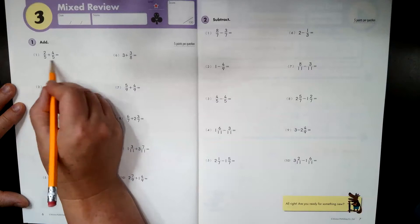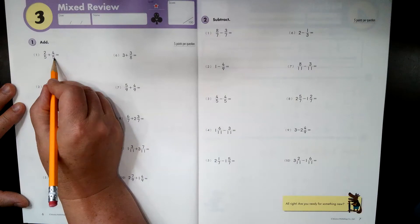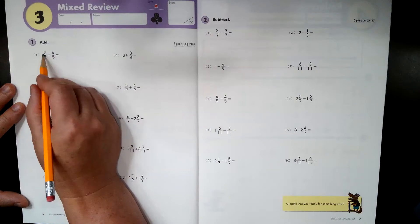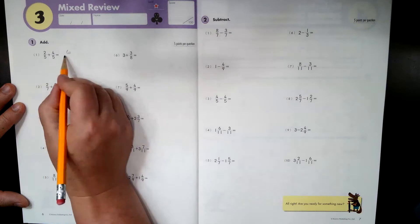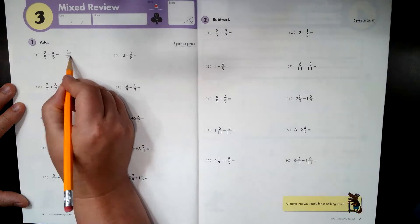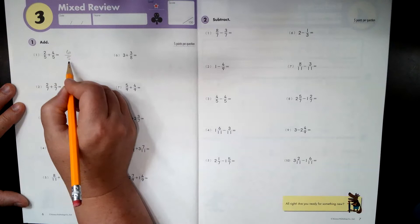So adding, the thing that matters the most is that bottom number, right? Is the denominator the same? If it is, we add across the top. Two plus four is six over five. What's the problem with this?